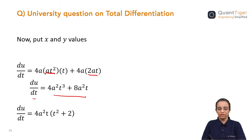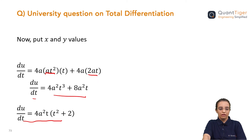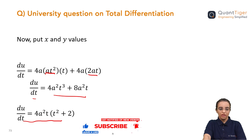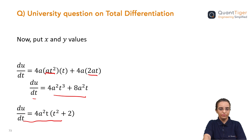Taking 4a squared t as common, we get the final simplified answer. This is how we found the value of du by dt. It is straightforward if you remember the formula of total differentiation — where to put the del operator and where to use the d operator. The key point to keep in mind: if you are differentiating with respect to t or any variable, the final answer should be entirely in that variable's form.